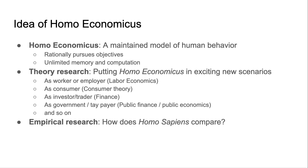You do the same on the worker side: rationally pursuing education and job opportunities to maximize some objective function without constraints on computation and memory. Many sub-fields of econ take that basic model and put it in different situations — finance with investors and traders, public economics with governments and taxpayers. Empirical research asks: what do actual people and firms do, and how much does that match our theory?